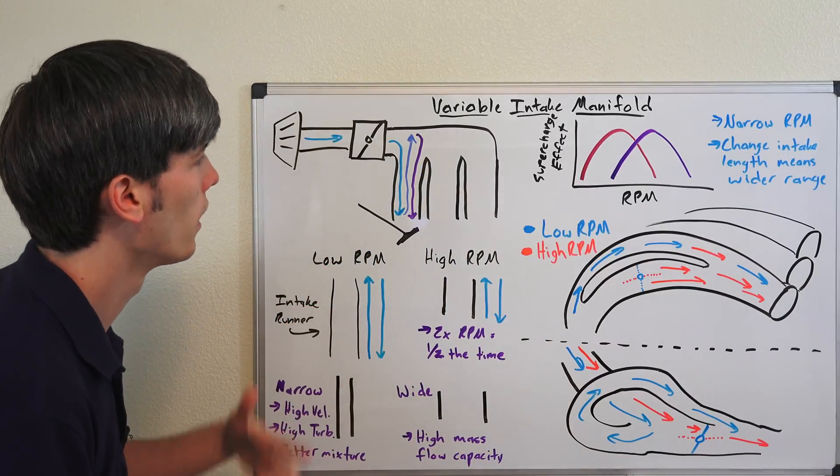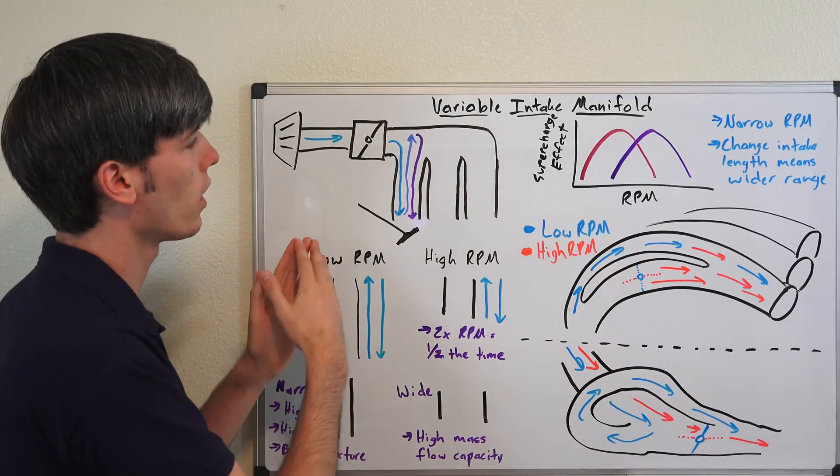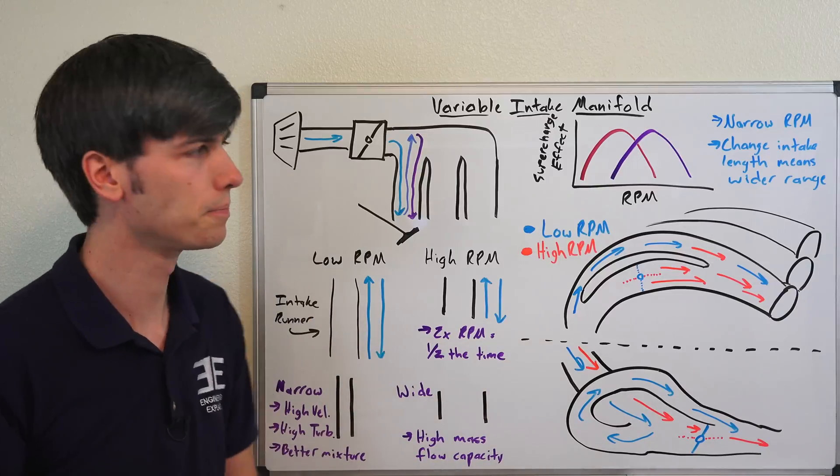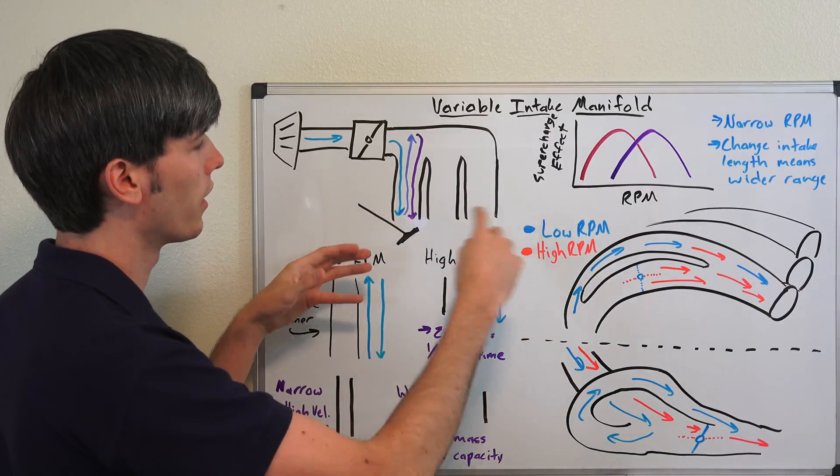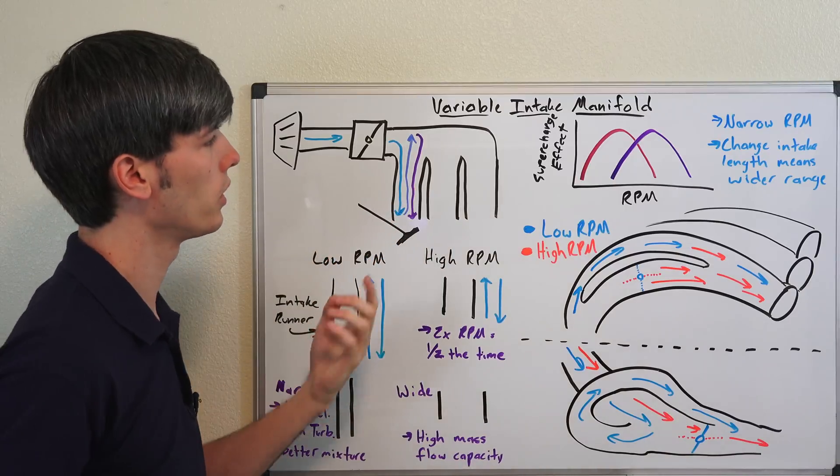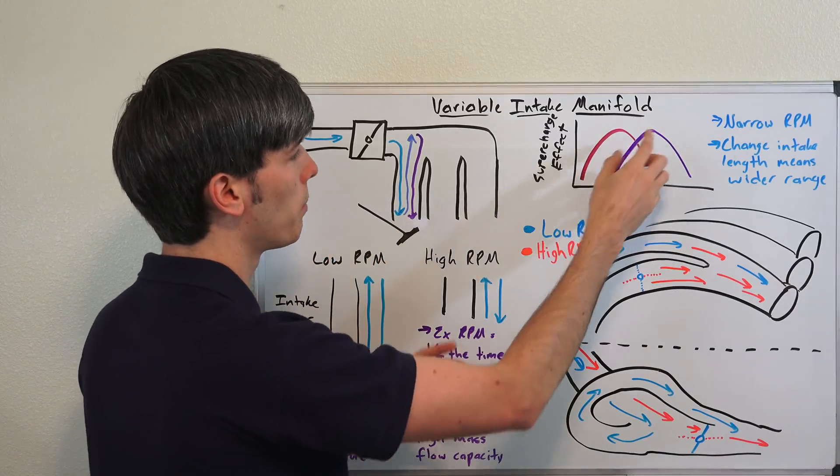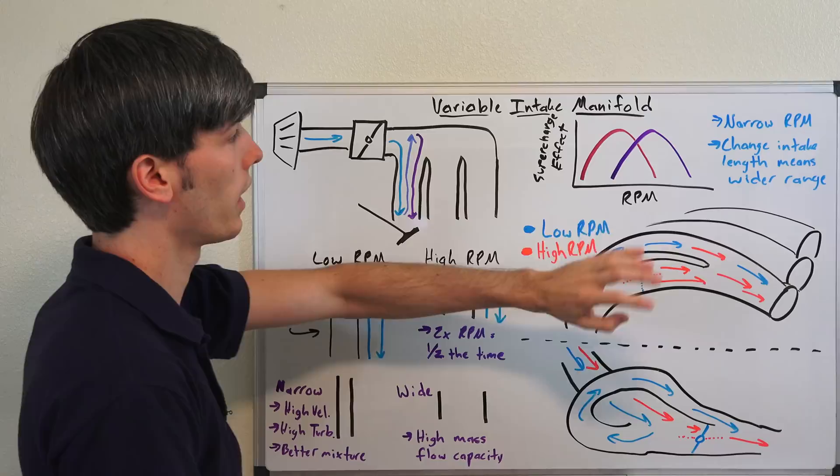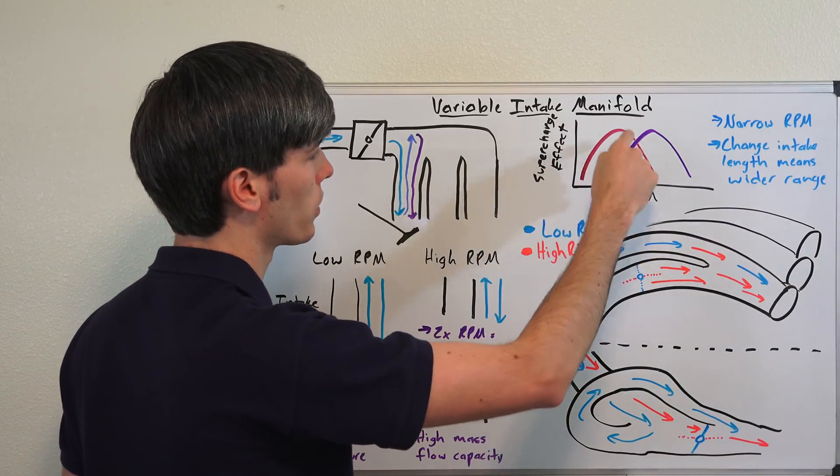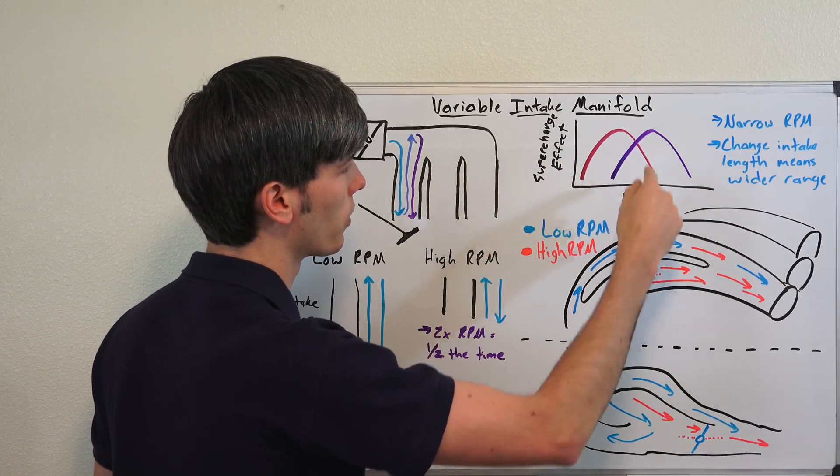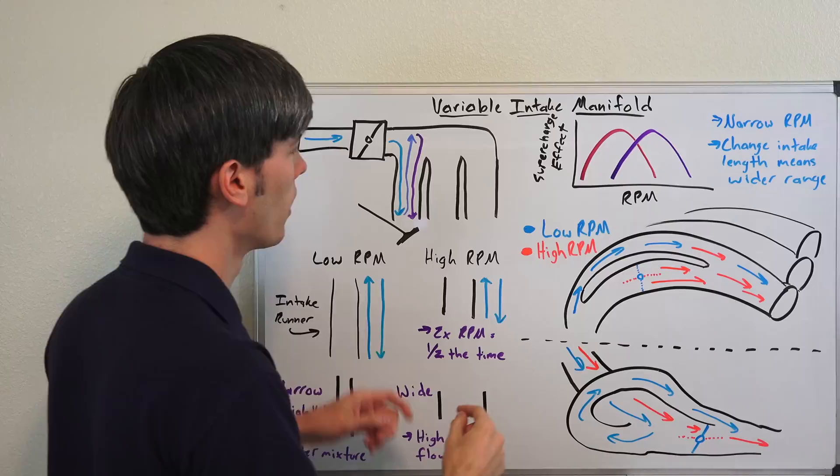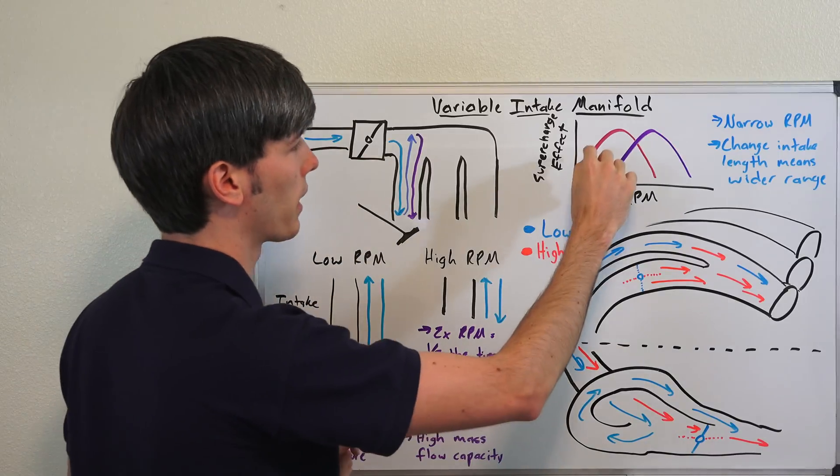The reason why you would want to use a variable intake manifold is you can create another range at which this is going to be useful. So you're just going to have this one peak here. We've got this little simplified plot to show the supercharging effect and where it's at its most effective point. It would actually have some smaller peaks in there depending on how many times it's bounced back and forth.